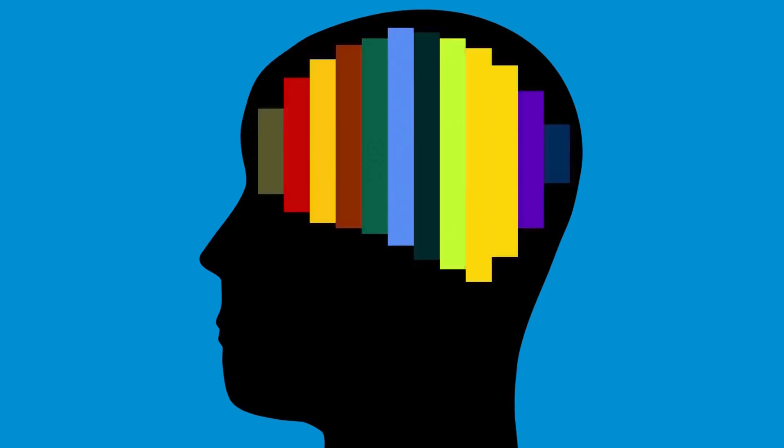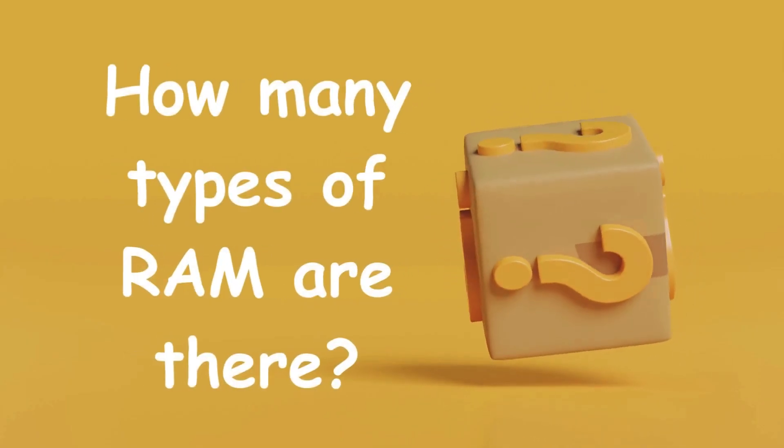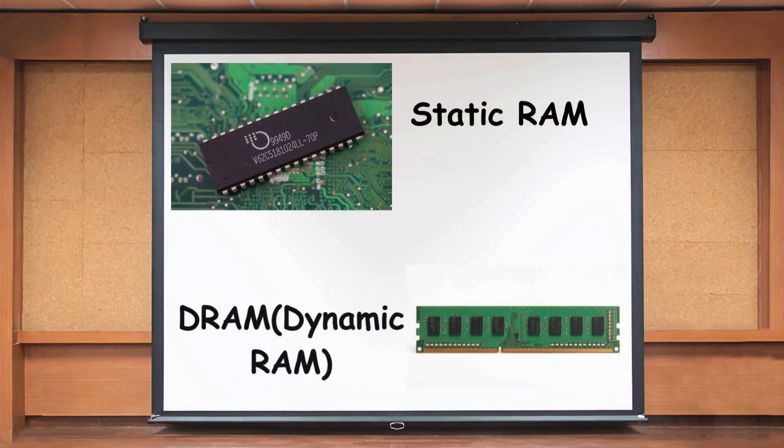Now, let's do some brainstorming. How many types of RAM are there? There are two types of RAM, static RAM and dynamic RAM.